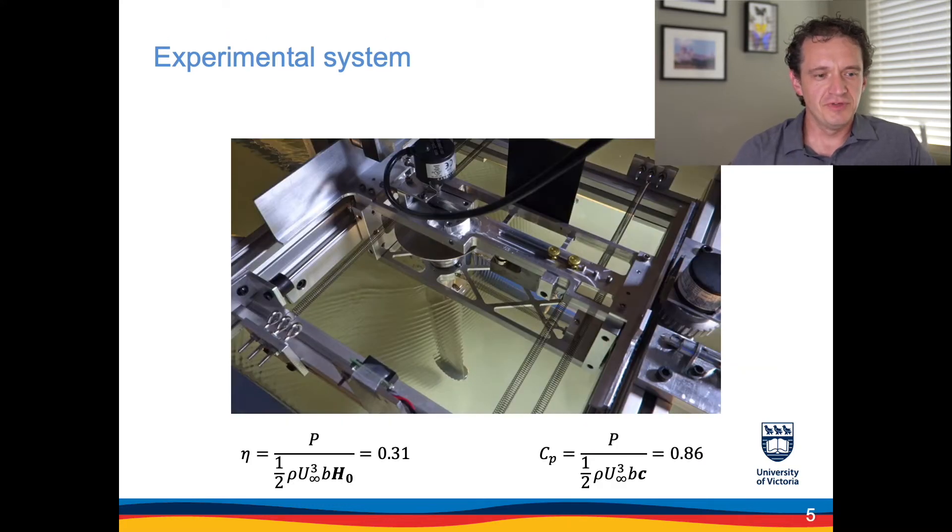This is the top view of the experimental apparatus mounted on top of the water tunnel. The foil is visible right here. The flow is from right to left and you can see the springs that were used to provide the stiffness in the heave direction. There were encoders both in pitch and heave that were measuring the kinematic response and we also used a magnetic brake on the system that simulated the power takeoff so we could measure the power produced by the foil.